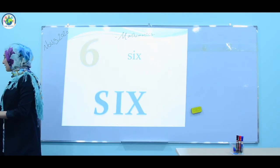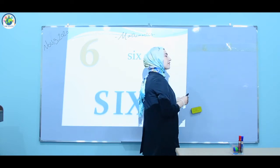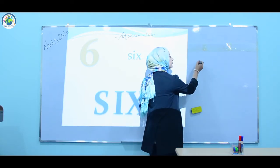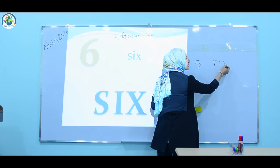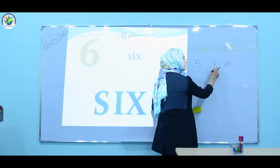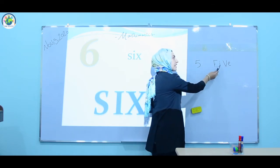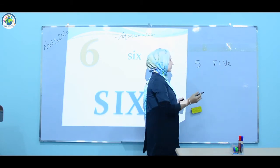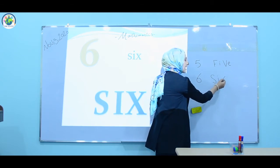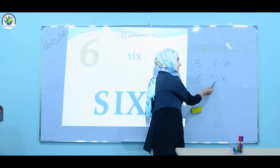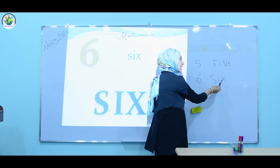And now let's learn how to write it. Number five — how to write and spell number five. F, I, V, E. Five. F, I, V, E. Five. F, I, V, E. Five. Six. S, I, X. Six. S, I, X. Six. S, I, X. Six. Good job.